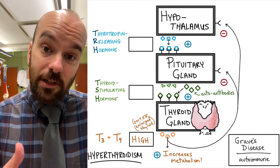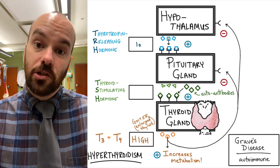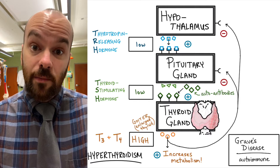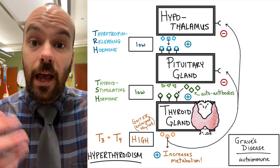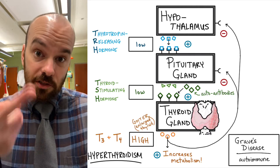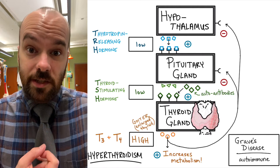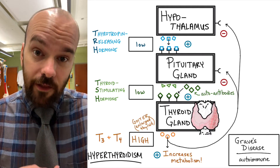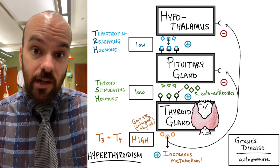The excess T3 and T4 will inhibit the pituitary and hypothalamus, bringing TRH and TSH levels down. The hormone levels here are the same as with the thyroid tumor. So if a patient comes in with hyperthyroidism and high T3 and T4 but low TSH, the doctor knows to look in two places: they can test for autoantibodies to check for Graves' disease, or use a scan to look for a thyroid tumor. Of all causes of hyperthyroidism, Graves' disease is actually the most common.